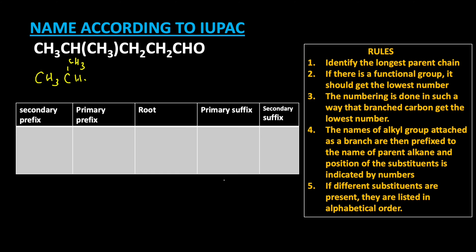Then after that: CH2 CH2 CHO. Now let us start the numbering. The CHO group should get the lowest number, so: 1, then 2, then 3, then at the fourth position the methyl group is attached. Total carbon atoms: 5 carbons.